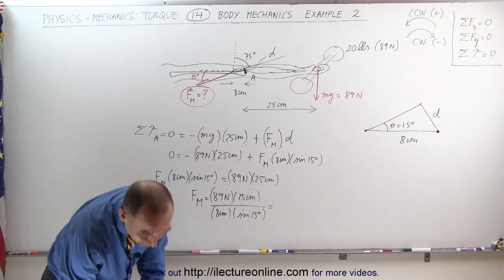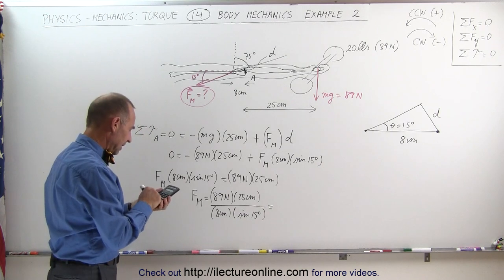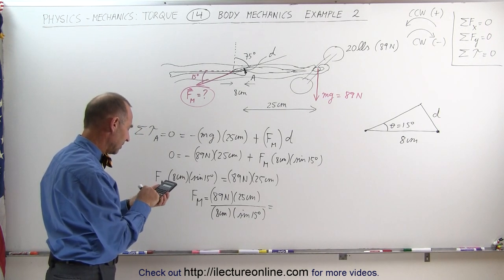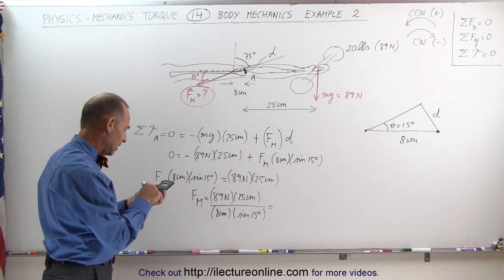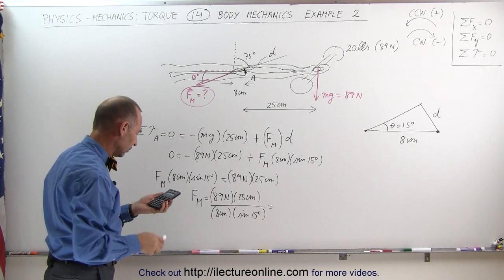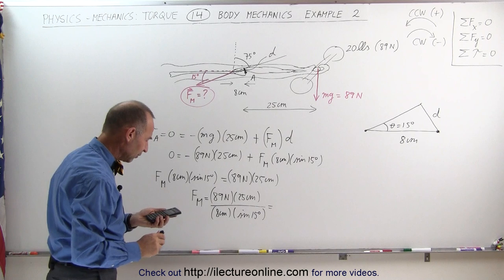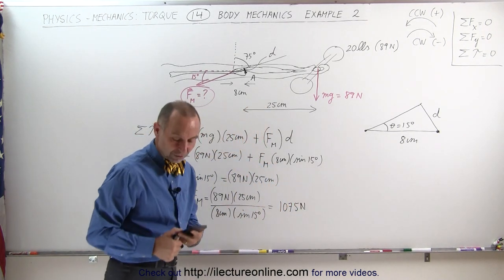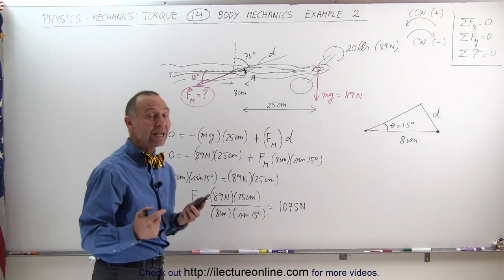Let's find out what that equals. 89 times 25 divided by 8 and divided by the sine of 15 equals 1075 newtons - over a thousand newtons, more than the typical weight of a person supported by that muscle in the forearm.